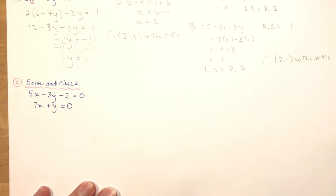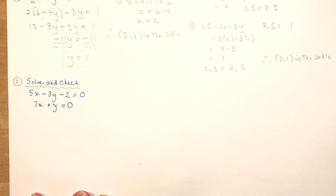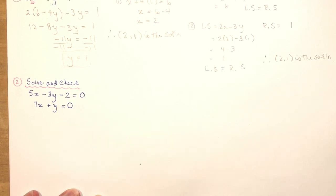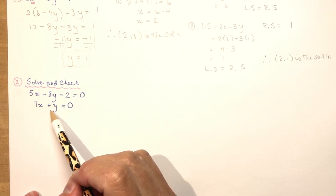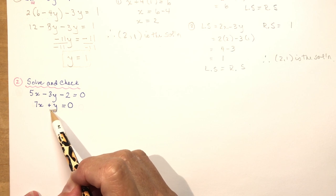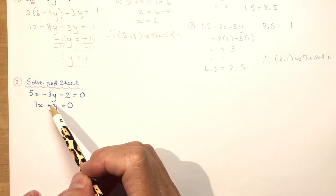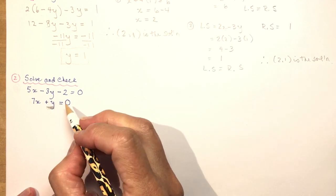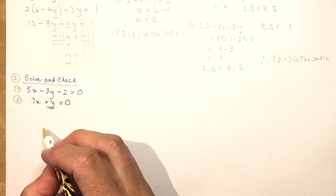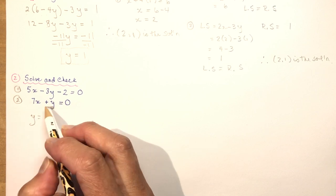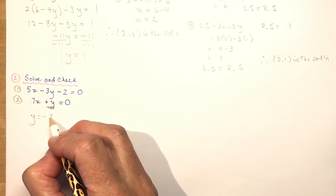Let's move on to a more difficult example. Look at both equations and determine which is easiest to solve for a certain variable. This equation has a 5 in front and others have coefficients, but one just says y — that's the perfect one to isolate because it won't give crazy numbers. So I'll call them equation 1 and equation 2, and solve for y: y equals minus 7x.